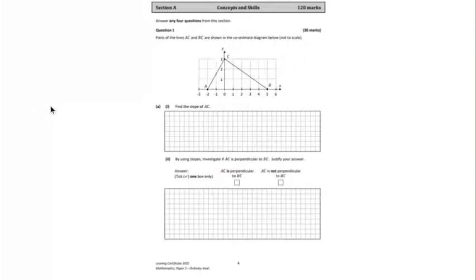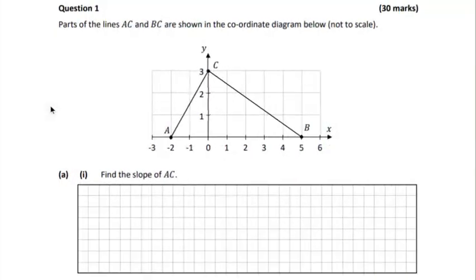We have to get the slopes of lines AC and BC in the first part. So let's find the slope of AC. Let's assign x1, y1 to point A. So x1, y1 is over here and we can see that it's -2 in the x and 0 in the y.